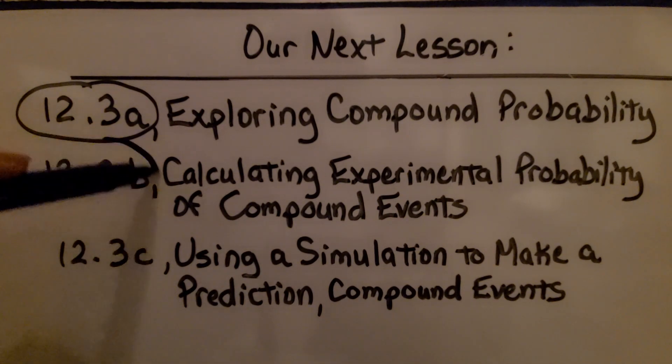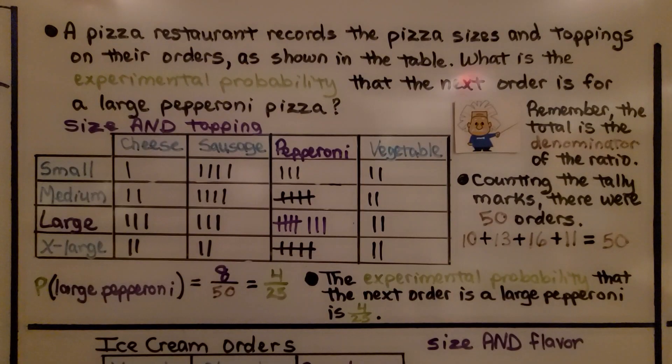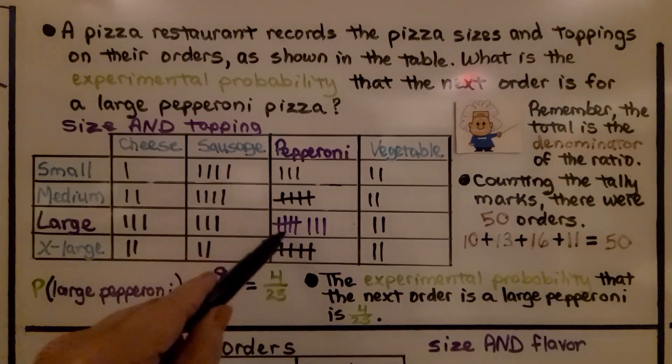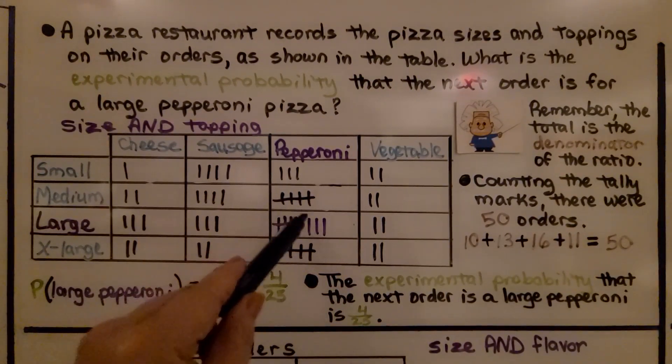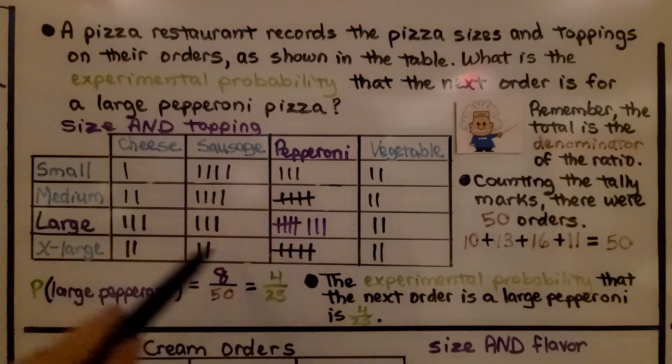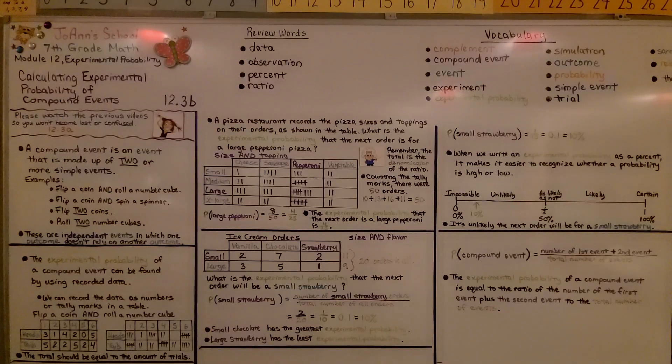Okay, that wraps up the second part. We're going to move on to the last part, using a simulation to make a prediction for compound events. Just remember that the numerator in our ratio is the amount that is in the table for those two events, and the denominator is the total of all the events, the number of the trials. I hope you'll join me for the last part of the lesson, and that you have a great day. Bye!